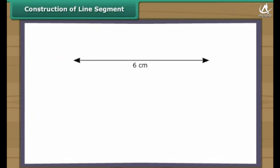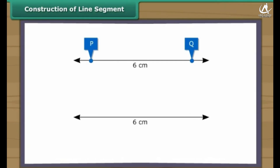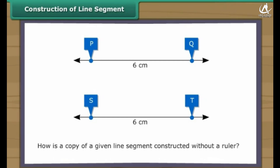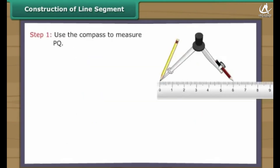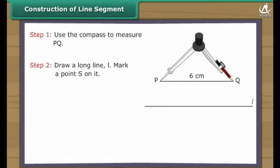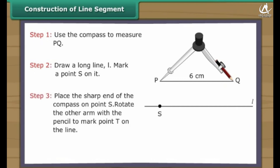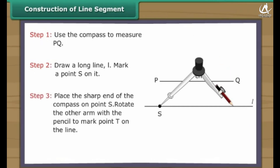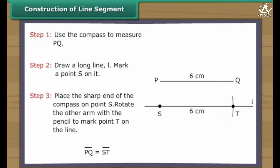Suppose a six centimeter long line segment PQ is given. We want to create another line segment ST of the same measurement. How do we do it without using a ruler? Use the compass to measure PQ. Draw a long line L. Mark a point S on it. Place the sharp end of the compass on point S. Rotate the other arm with the pencil to mark point T on the same line. We have a line segment ST which is a copy of the line segment PQ.